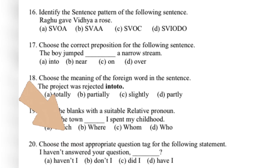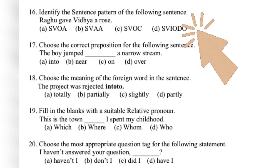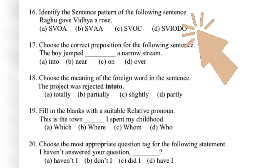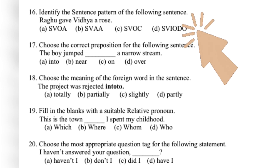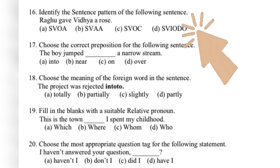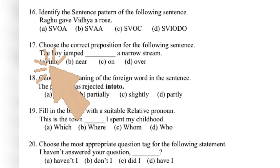Grammar question: 'Raghu gave Vidya a rose.' Raghu is the subject, gave is the verb, Vidya is the object. Here, Vidya becomes the indirect object and rose becomes the direct object.